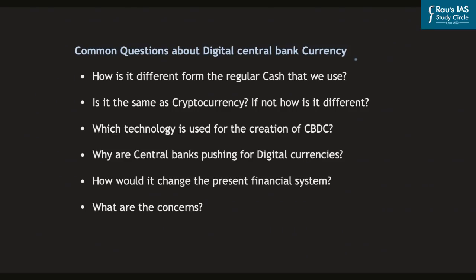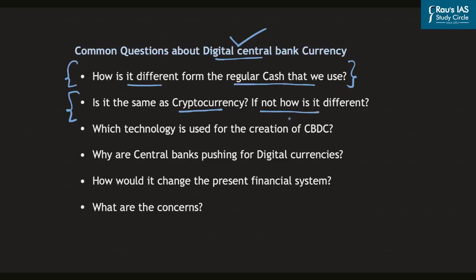The common questions about central bank digital currency are: how is it different from regular cash or from digital currency used through credit cards and payment apps? Second, are these digital currencies the same as cryptocurrency, and if not, how are they different? Further, what technology will be used for creating central bank digital currency, and why are central banks pushing so hard for its introduction?